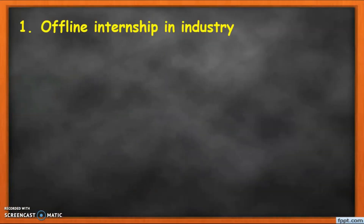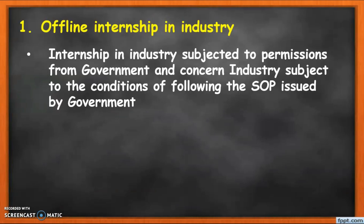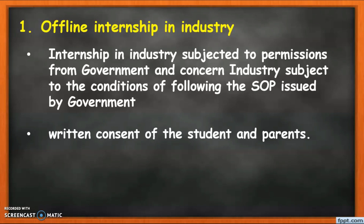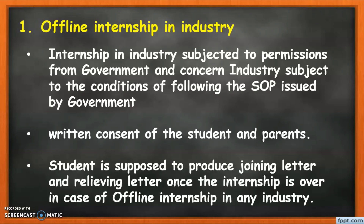The first option is offline intensive in the industry. Here, students have to spend two weeks in the industry from the government as well as private sector, subject to permission from the government and the concerned industry. Students need to follow the standard operating procedure issued by the government and take permissions from the industry. The written consent of students and parents is mandatory, and the student must produce a joining letter and relieving letter once the intensive is over.